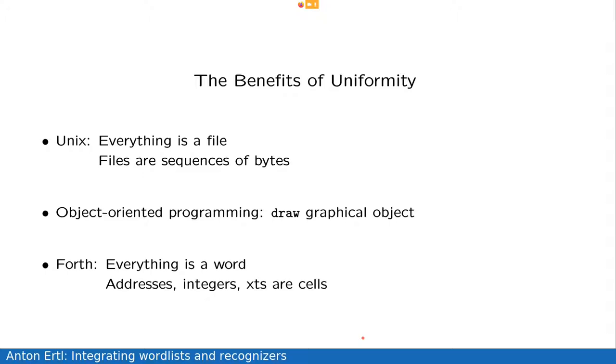In object-oriented programming you have different kinds of things that are in some way different, but are similar in other respects, like you have a circle that you want to draw, and you have a triangle that you want to draw, and you can combine them as one graphical object, and have a draw method for it, and this was a big success.